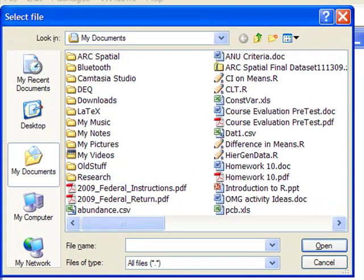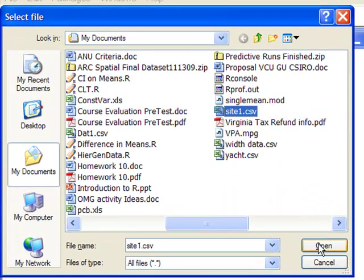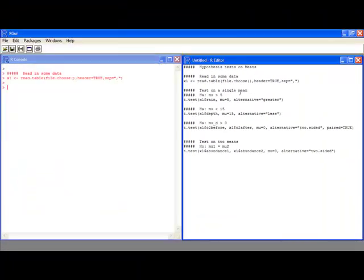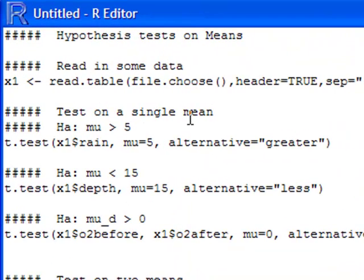My file is site one dot CSV. Okay, that read in the data. So the first thing I want to do is there's several variables in this data set. The first one I do is check to see if the rain amount, that is one of the variables, is greater than five. So my alternative is mu is greater than five.